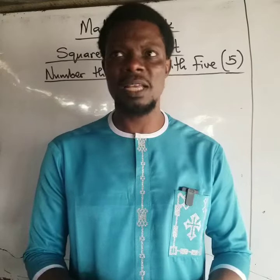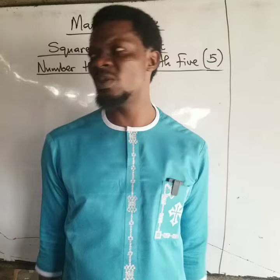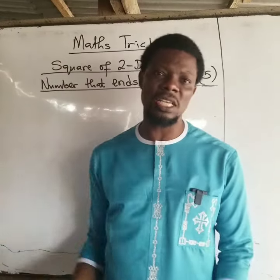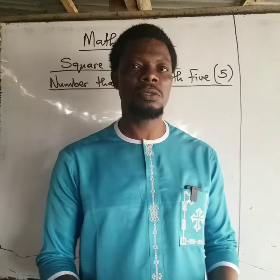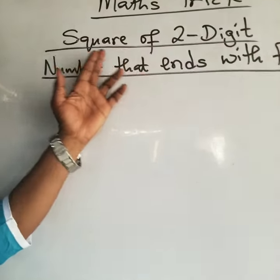But I just want to show you this trick so that you can teach your children. Math is fun. As you can see on the board: square of two-digit number that ends with five.